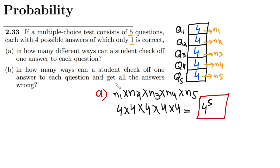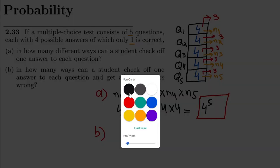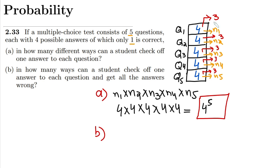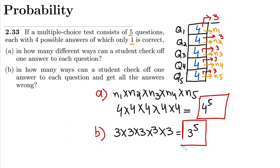In part B, it is asking us: in how many ways can a student check off one answer to each question and get all the answers wrong? We know that from the four options only one is correct, so the remaining three would be incorrect — similarly for each of the five questions. So instead of selecting from four he will select three from each question, giving us 3 multiplied by 3 multiplied by 3 multiplied by 3 multiplied by 3, which is 3 raised to the power 5. That is the answer to part B.